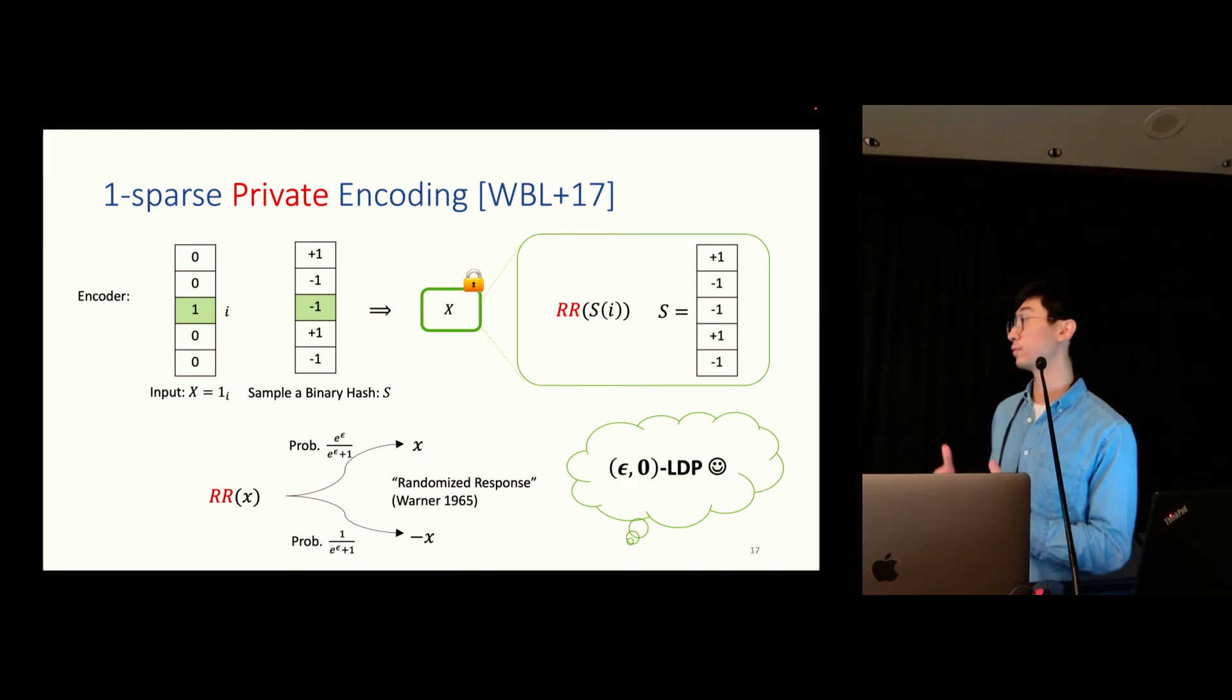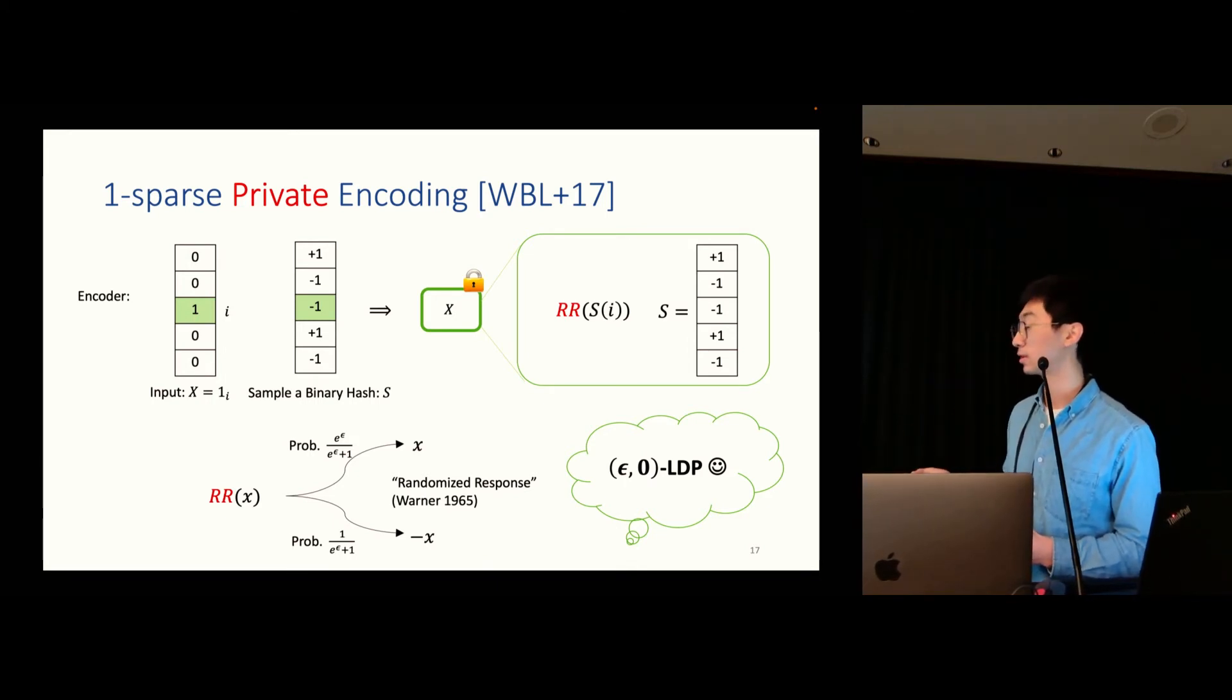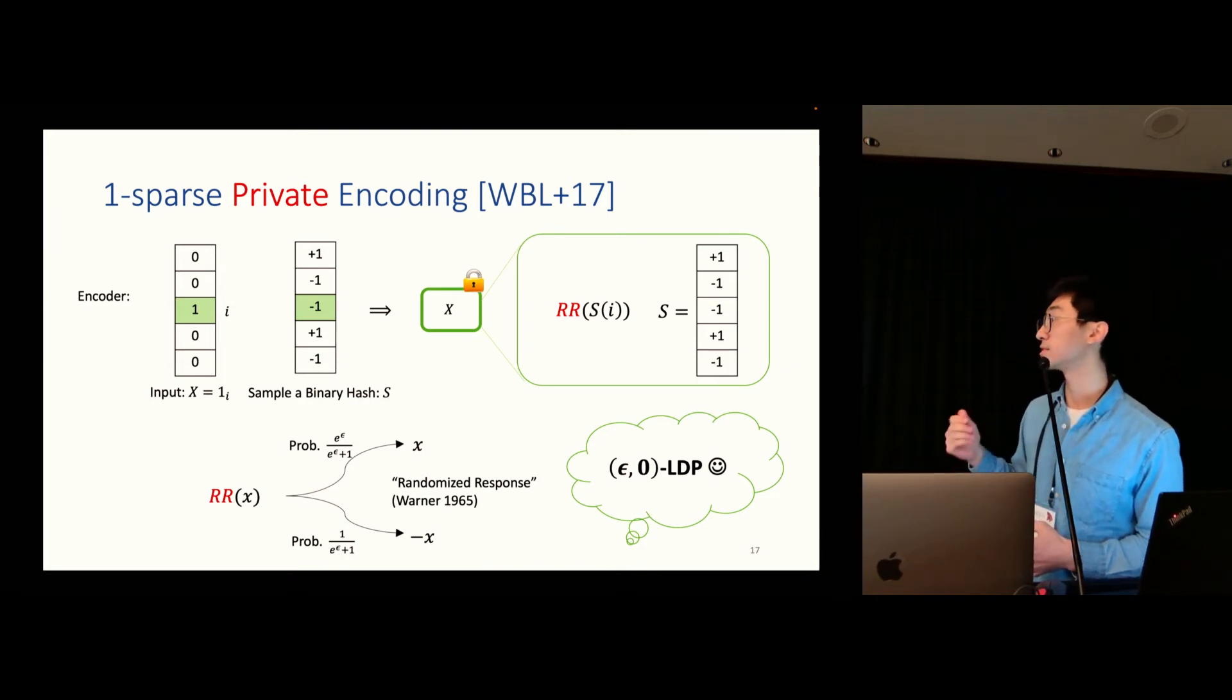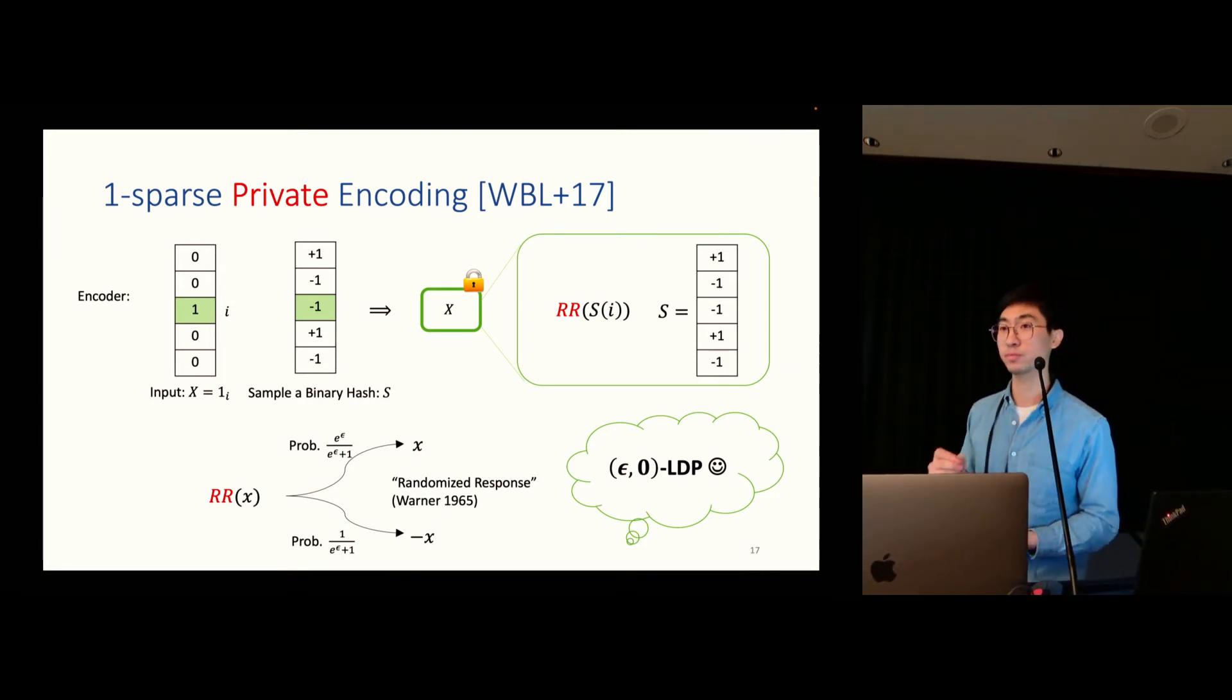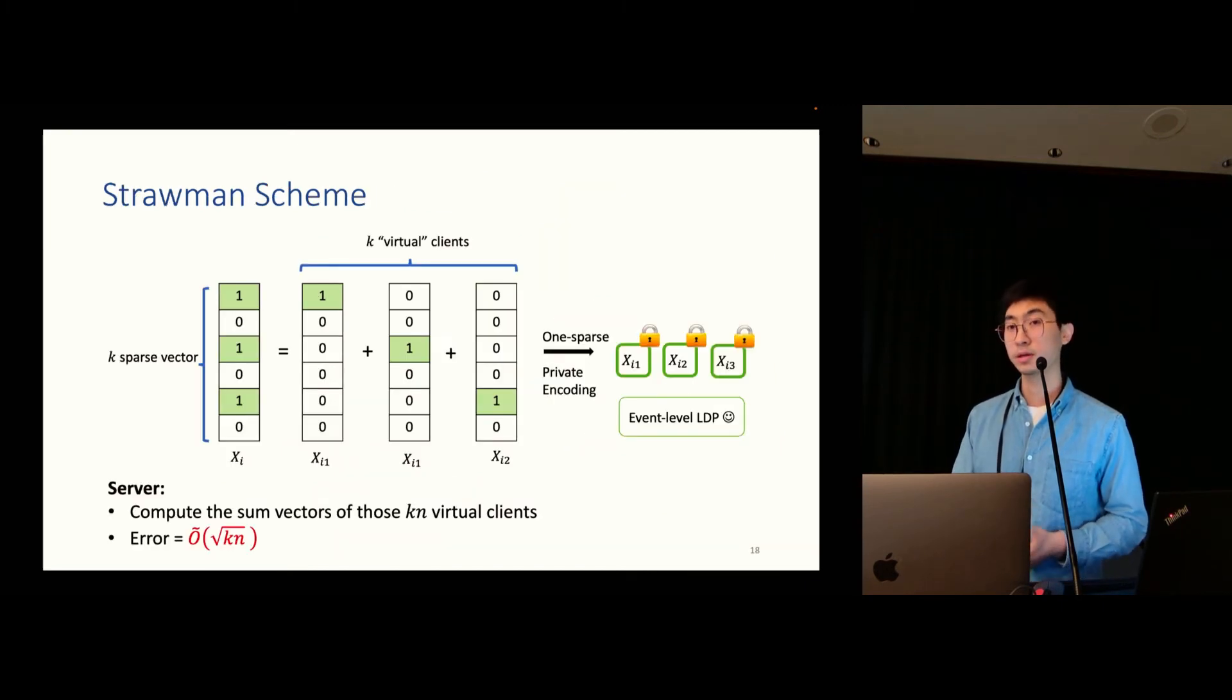How to make the previous scheme private? It is also not that difficult. Now, we are not directly include the hash value in the encoding, but now we are flipping that bit with some small probability. And this technique is called randomized response. It says, if we flip that bit with probability 1 over e to the epsilon plus 1, then the whole scheme satisfies epsilon LDP. And actually, in the one sparse case, event level or user level is equivalent.